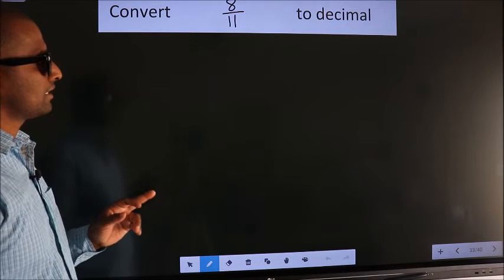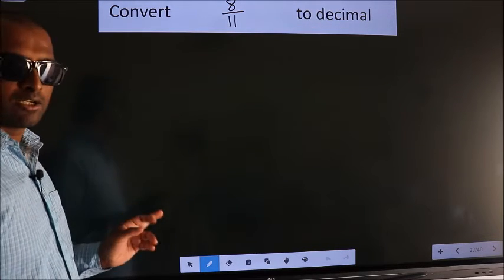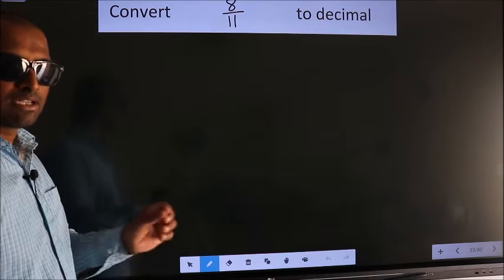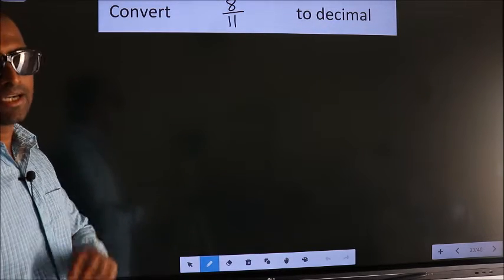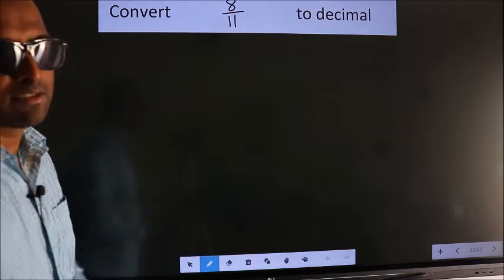Convert 8 by 11 to decimal. To convert this to decimal, we have to divide, and to divide we should frame it in this way.